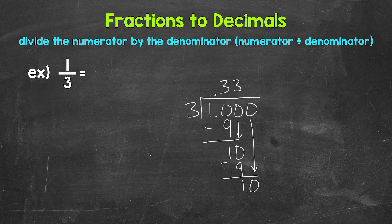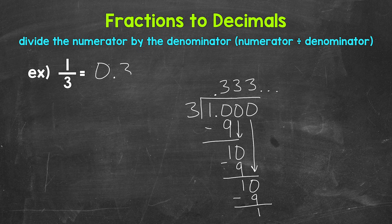So 10 divided by 3 again is 3. Let's put another 3 up here. Multiply: 3 times 3 is 9. Subtract: 10 minus 9 is 1. So again, this is going to go on forever and give us a repeating decimal — those 3s will never end. So 1 third as a decimal, we can write this as 0.3 and then put a bar above the 3 to show that that digit repeats. So 1 third equals 0.3 repeating.